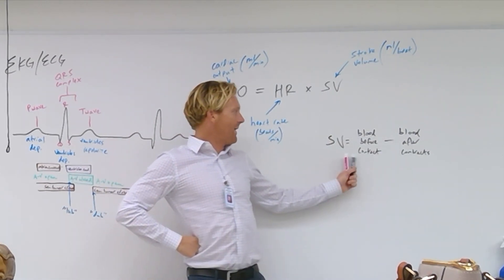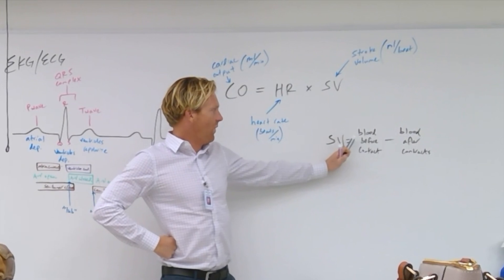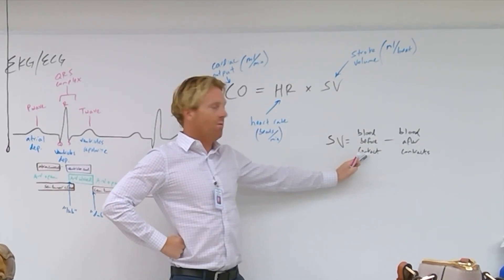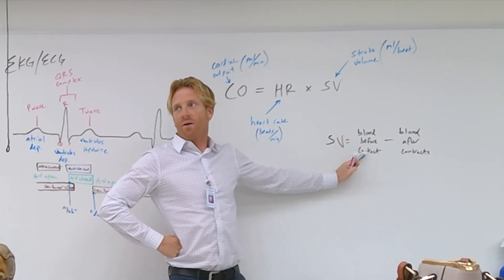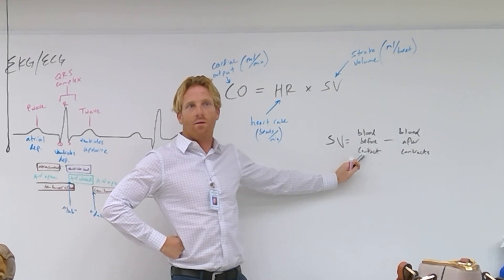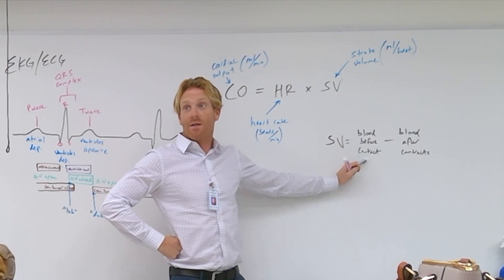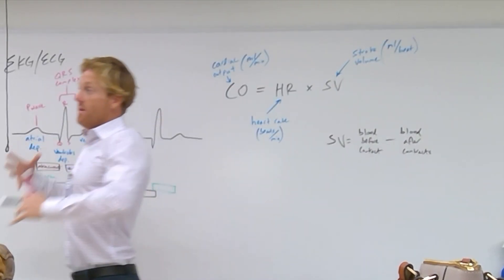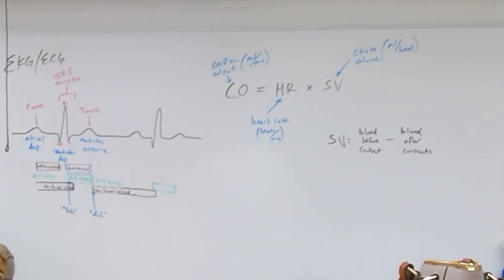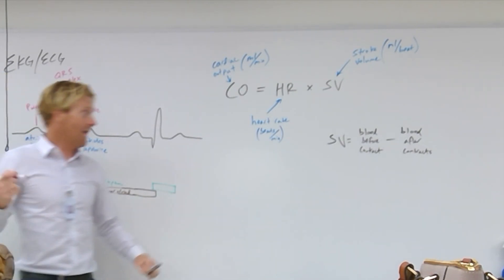So, if we want to increase stroke volume, what would we have to do to this value, the blood in the heart before it contracts, up or down? We'd have to fill the heart up more. This happens automatically with exercise. So, when we're exercising, the blood returning to the heart is coming back faster through mechanisms that we'll talk about next week. So, we're running, blood's rushing back to the heart. That's going to cause the heart and the ventricles to fill up more. So, the blood before contraction increases due to exercise.